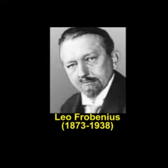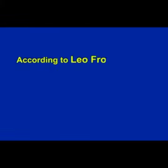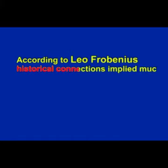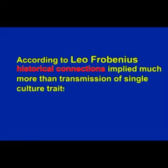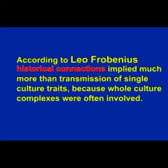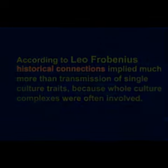Leo Frobenius, a student and colleague of Ratzel, took the idea of diffusion several steps further. According to him, historical connections implied much more than transmission of single culture traits, because whole culture complexes were often involved. He asserted that migration was an important factor of explanation alongside diffusion in explaining cultural similarities. He added another criterion, which he called geographical statistics, meaning that one should count the number of similarities.